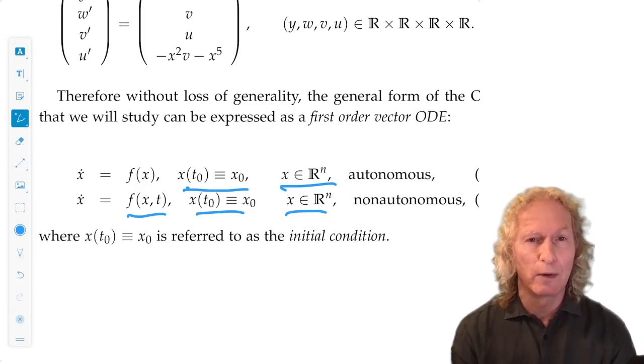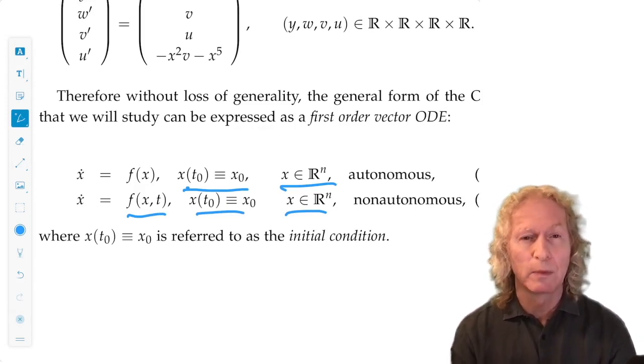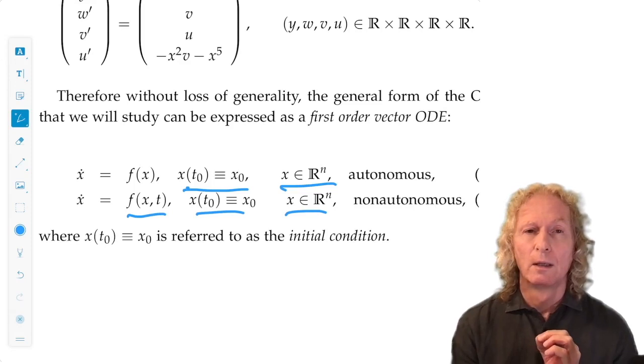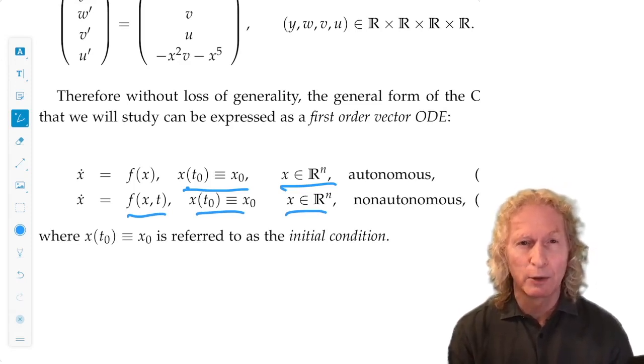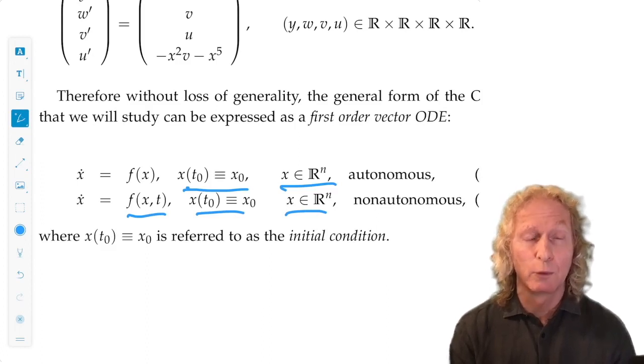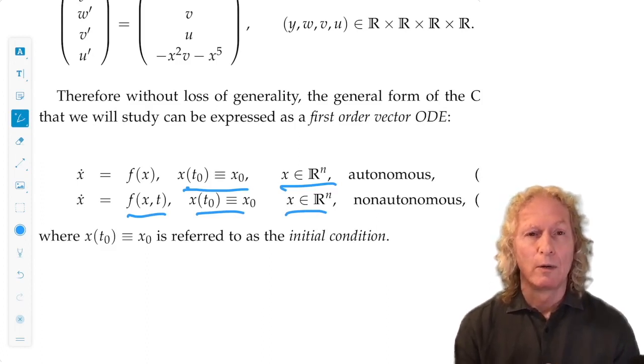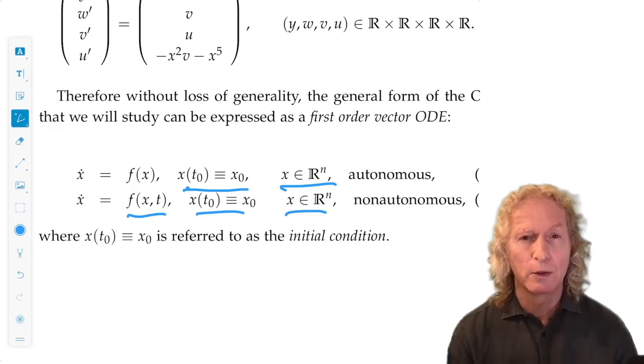And the function f of x, or f of x and t, at each point of the curve, gives you the tangent vector. So in that sense, the natural interpretation in this formulation of an ODE is as a vector field defined on the phase space.